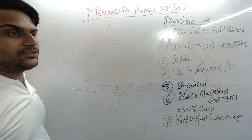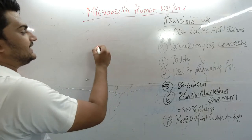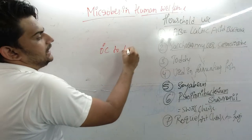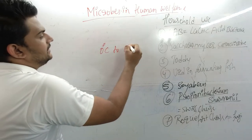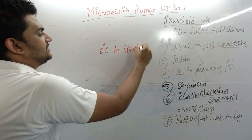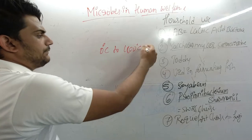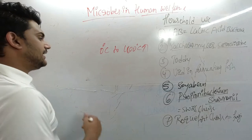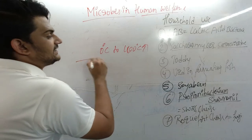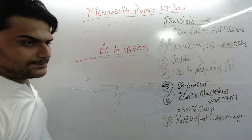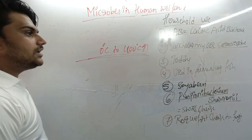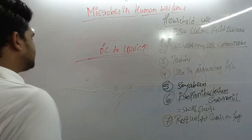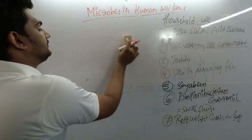Before we begin, note that microorganisms can survive below zero degrees Celsius and above one hundred degrees Celsius - even in hot springs. That is the resilience of these organisms. Now let's see how we have been using them for our benefit.